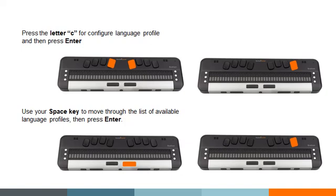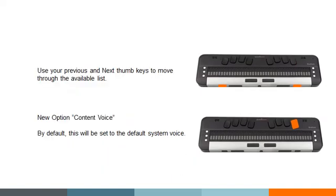I'm going to use my space bar to move to the profile I'd like to configure. On this device I have English and Spanish. I'm going to choose English from this list and press enter on it. I'm placed in the profile name edit box — you can name the profile whatever you would like. I'm going to use my next thumb key and we'll look at the traditional options that have been available.